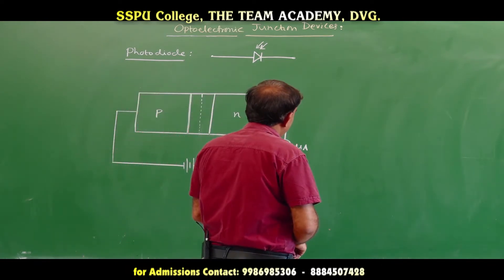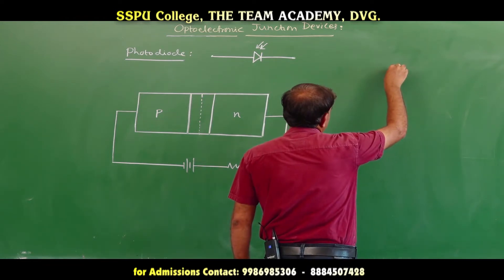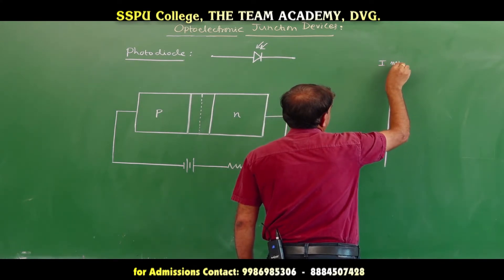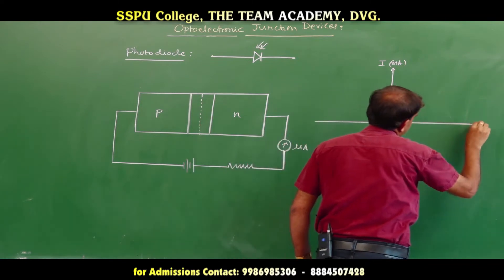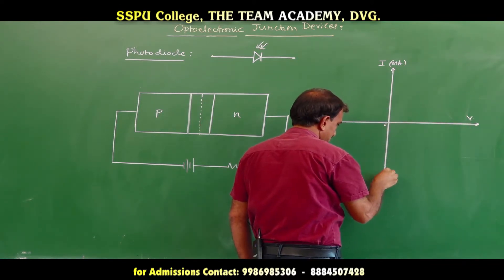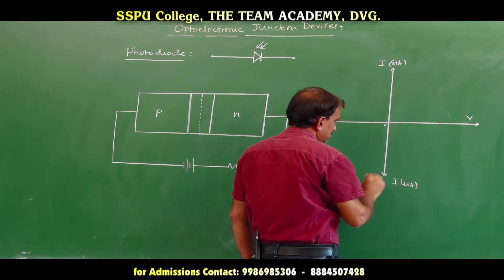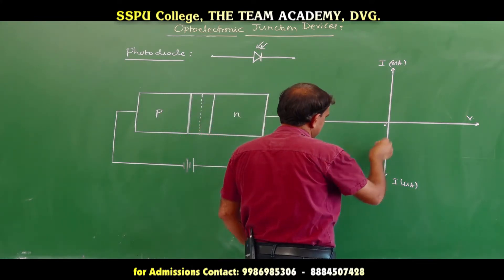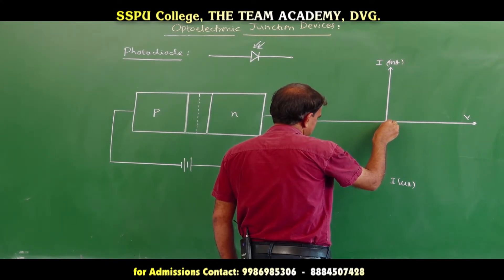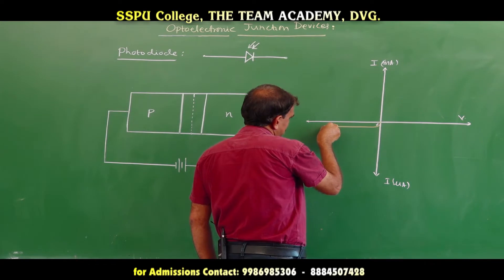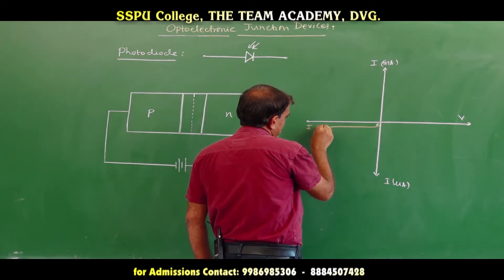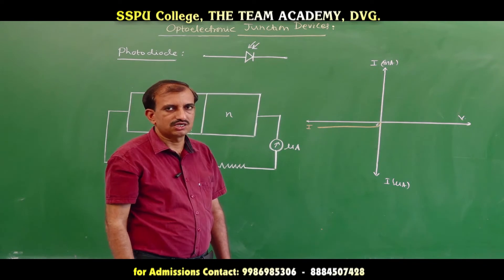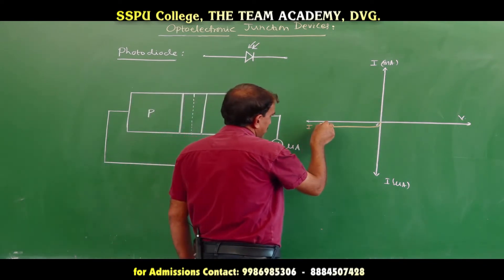We can draw a graph of current versus voltage — the I-V characteristics of the photodiode. The x-axis shows voltage in volts and the y-axis shows current in microamperes. As the reverse voltage increases, the reverse current also increases. This small current flowing through the diode under reverse bias is called the reverse saturation current, also known as the dark current.